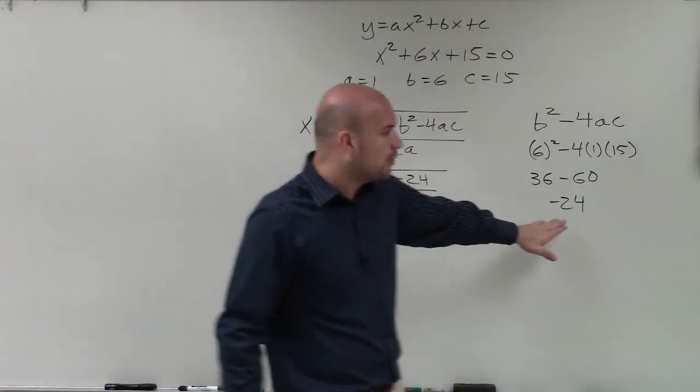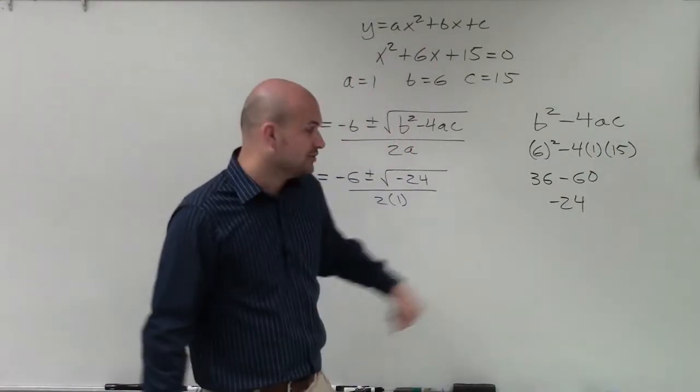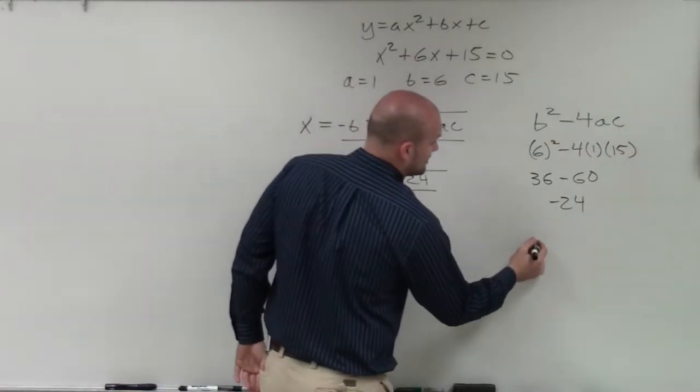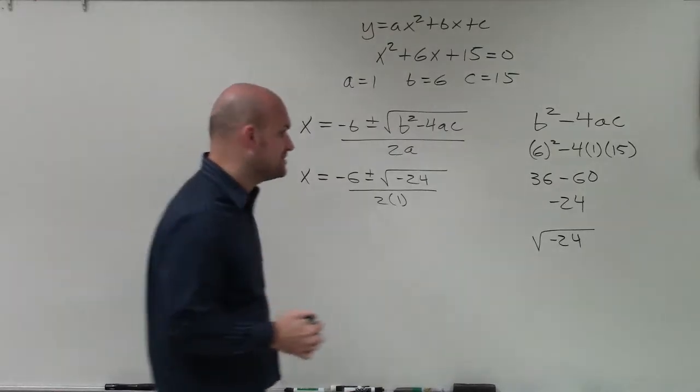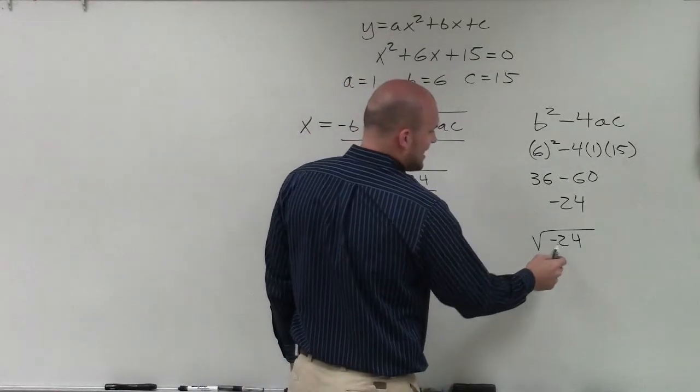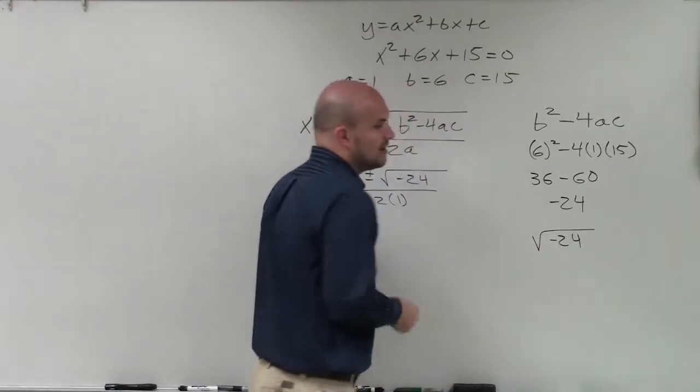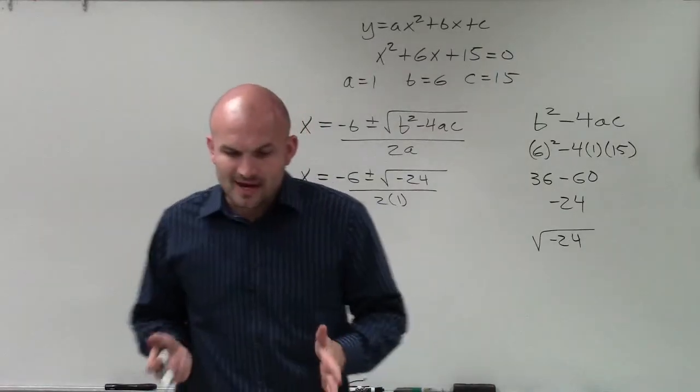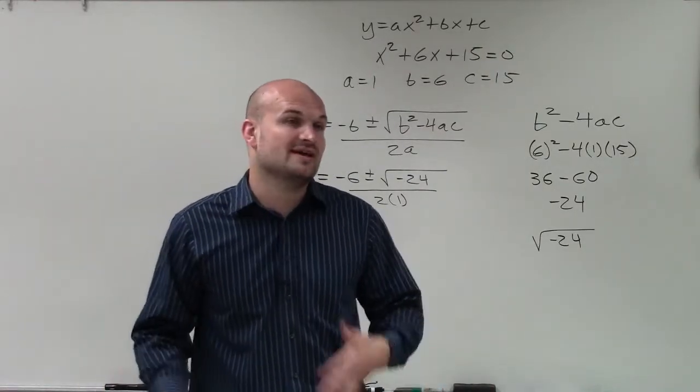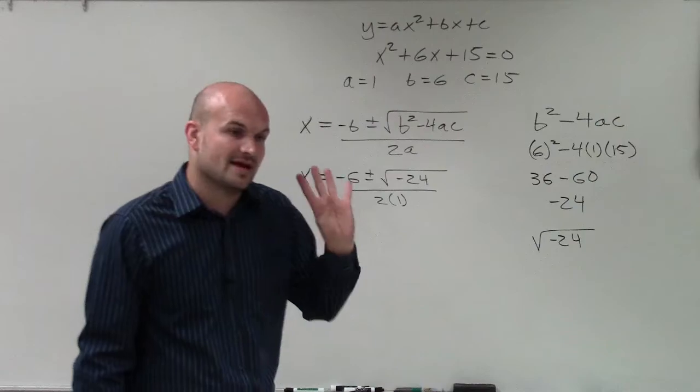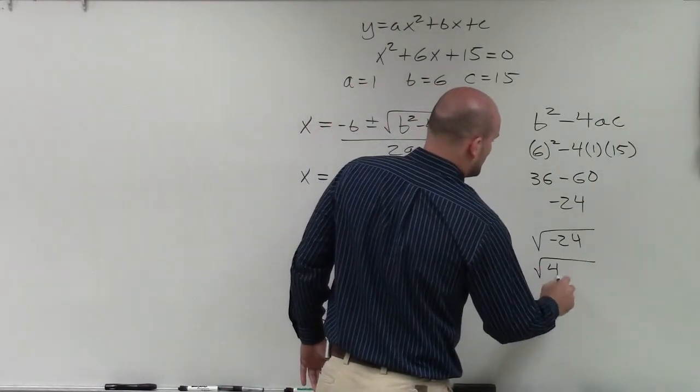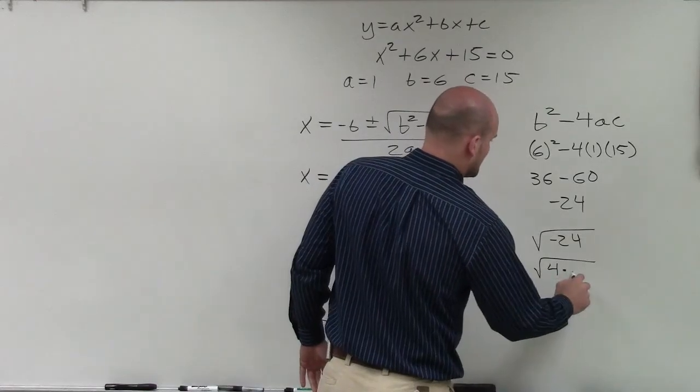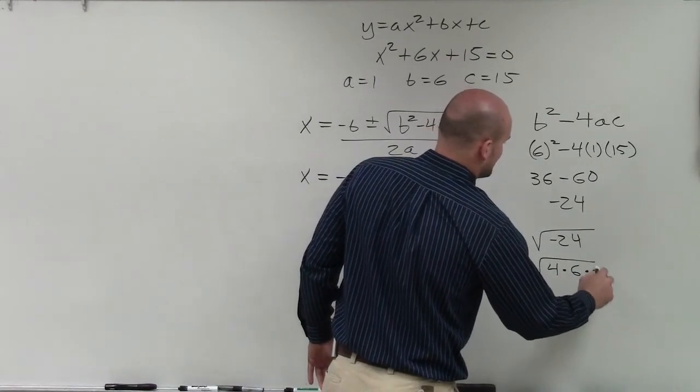Now, it will become important to make sure we can simplify the square root of 24 or negative 24. So when going through your imaginary numbers, what I'm going to do is I'm going to factor. I'm going to break this up to see what squared number that I know, what is the largest squared number that I know of that divides into 24. And that number is going to be 4. So I'm going to rewrite this as a product of 4 times 6 times negative 1.